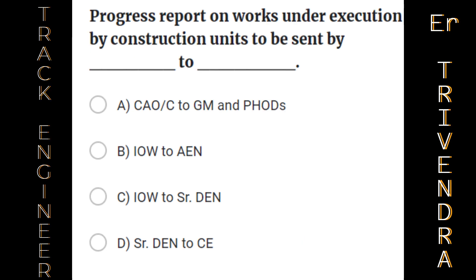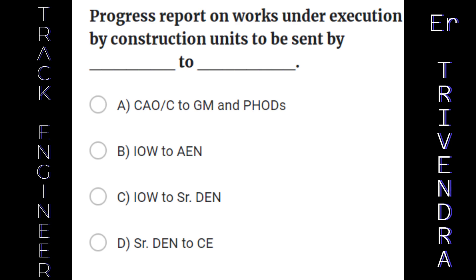Progress report on works under execution by construction units to be sent by: A. Chief Administrative Officer Construction to General Manager and PHODs. B. IOW to AEN. C. IOW to Senior Divisional Engineer. D. Senior Divisional Engineer to CE. The right answer is: Chief Administrative Officer Construction to General Manager and PHODs.